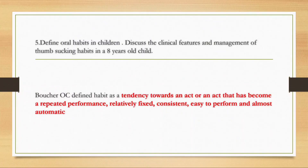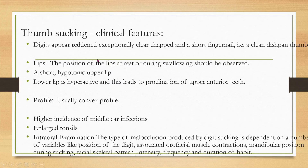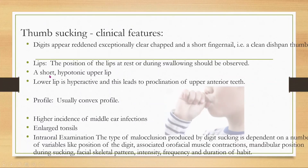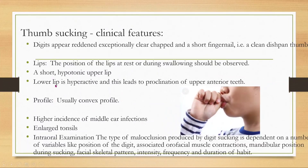The next question asks to define oral habits and discuss the clinical features and management of thumb sucking. Clinical features include: the digit appears reddened with an exceptionally clean, short fingernail — the classic 'dishpan thumb.' At rest or during swallowing, there will be a short hypotonic upper lip, a hyperactive lower lip, proclination of upper anterior teeth, a convex profile, higher incidence of middle ear infection, and large tonsils.